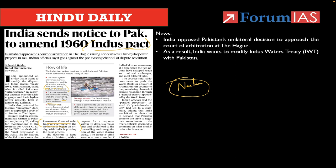Pakistan controls the western flowing rivers. Pakistan shall receive unrestricted use of all waters of the western rivers — Indus, Jhelum, and Chenab. India is permitted to use the waters of the western rivers for domestic use, non-consumptive use, agriculture, and generation of hydroelectric power subject to certain conditions. India can construct hydro projects in the western flowing rivers, but it should not affect the flow of the river. India can construct run-of-river projects across the west flowing rivers, but it is not supposed to construct major hydro projects.